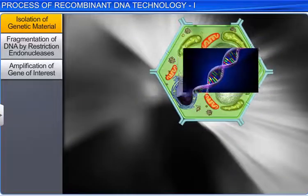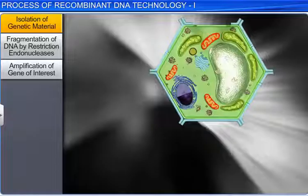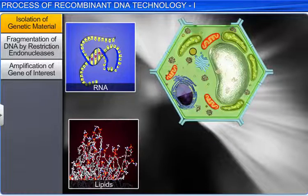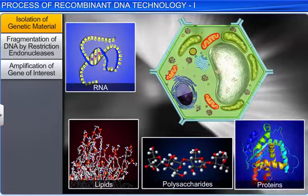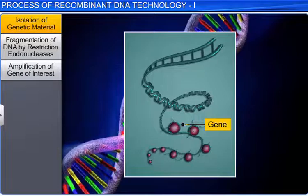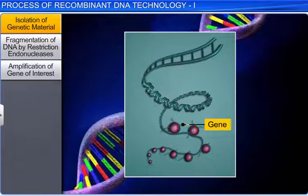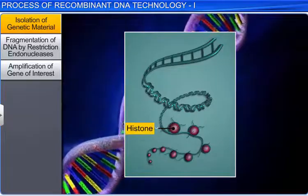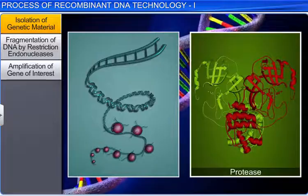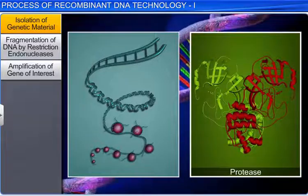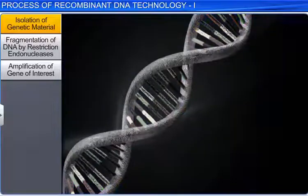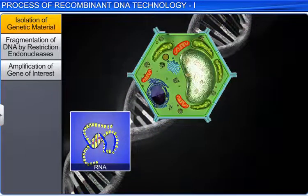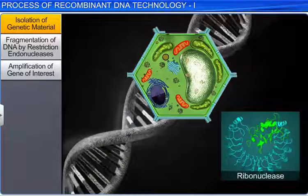DNA is enclosed in the cell membranes, along with macromolecules such as RNA, lipids, polysaccharides, and proteins. Genes are located on long chains of DNA which are intertwined with proteins such as histones. These proteins can be removed by treating them with protease, an enzyme used to break down proteins. RNA can be removed by treating it with ribonuclease. Similarly, other molecules can be removed using specific treatments.